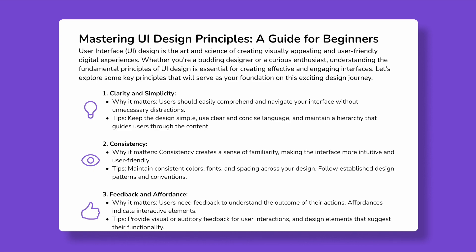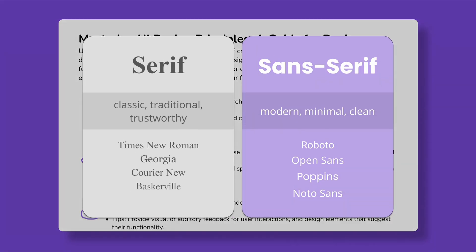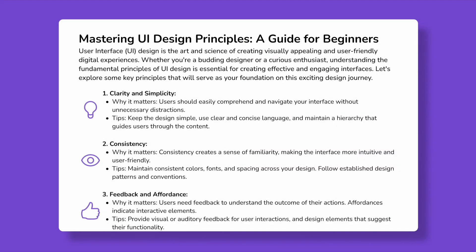The platform uses a sans-serif font for body text, which is known for its readability on screens. Line spacing and margins are well-adjusted, preventing text from feeling cramped. This attention to readability and typography ensures that users can focus on the content without straining their eyes, resulting in a positive and effective learning experience.